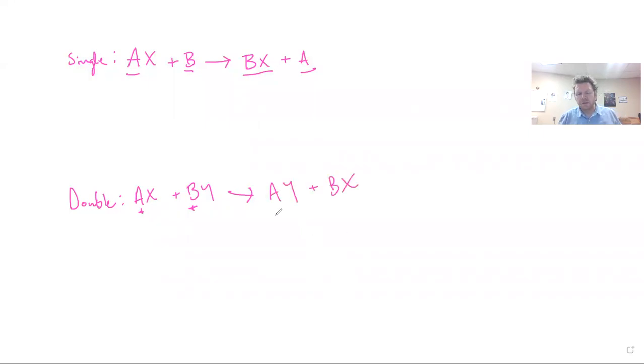Now the sequence that I wrote them in, AY + BX, you could just as easily write it as BX + AY. But essentially what you have is A, which was previously in a compound with X, now is in a compound with Y. And B, which was previously in a compound with Y, is now in a compound with X. So those are your single displacement and double displacement reactions.